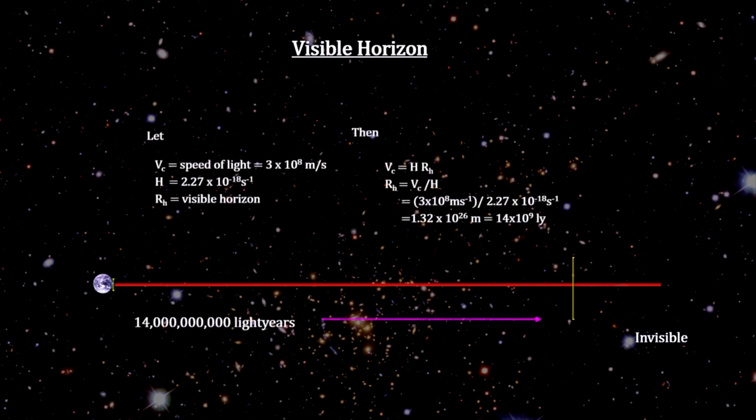Plugging in the numbers, we find that all galaxies beyond 14 billion light years could never be seen here. GNZ 11 is now 32 billion light years away. So, the light that is leaving GNZ 11 now will never reach us.